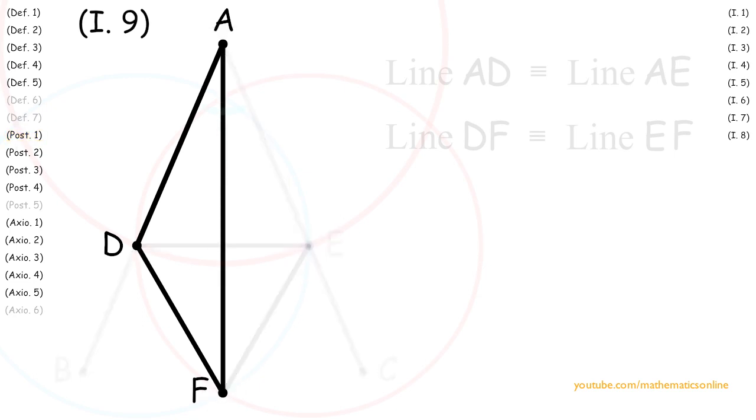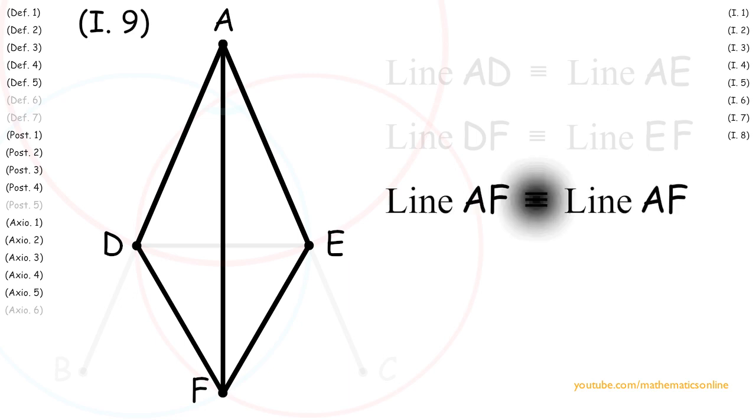So now looking at triangle ADF and triangle AEF, we can see that they both share a side in common. Specifically, line AF is congruent to line AF.